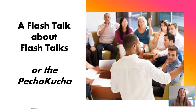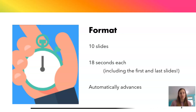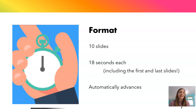A flash talk is an automated presentation style that is a lot shorter than a typical presentation and can be about a lot of different things. This particular flash talk is 10 slides long, each slide is 18 seconds each, meaning it's going to be a three minute presentation and it automatically advances.